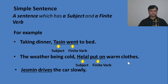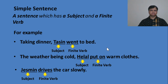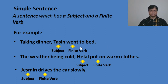'Jasmin drives the car slowly.' Here 'Jasmin' is the subject and 'drives' is the finite verb. So 'Taking dinner, Tassin went to bed,' 'The weather being cold, Halal put on warm clothes,' and 'Jasmin drives the car slowly' — these three sentences each have only one subject and a finite verb. So a sentence which has only one subject and a finite verb is called a simple sentence.